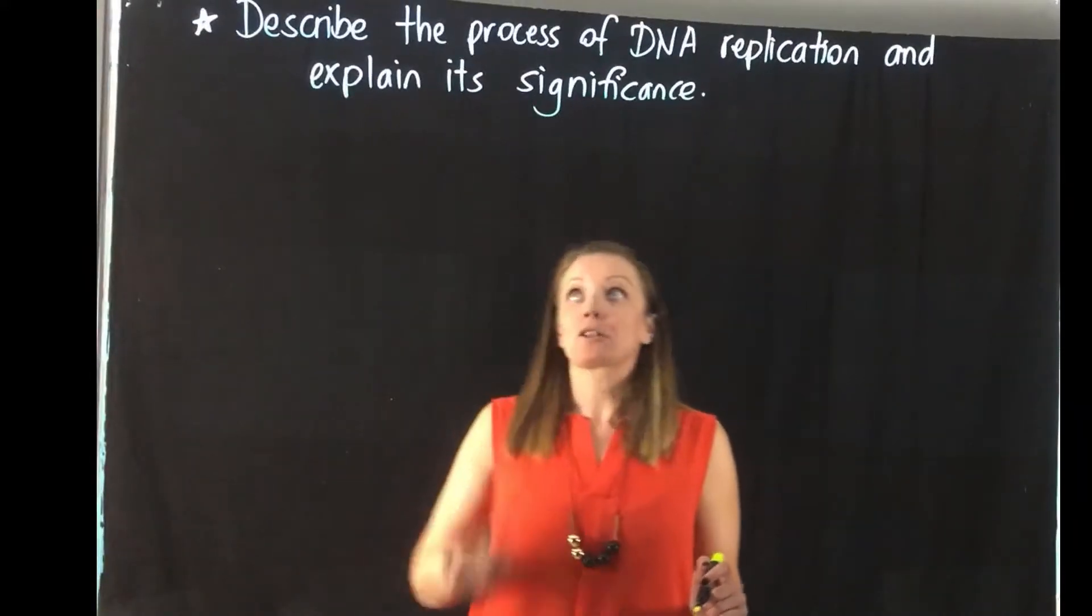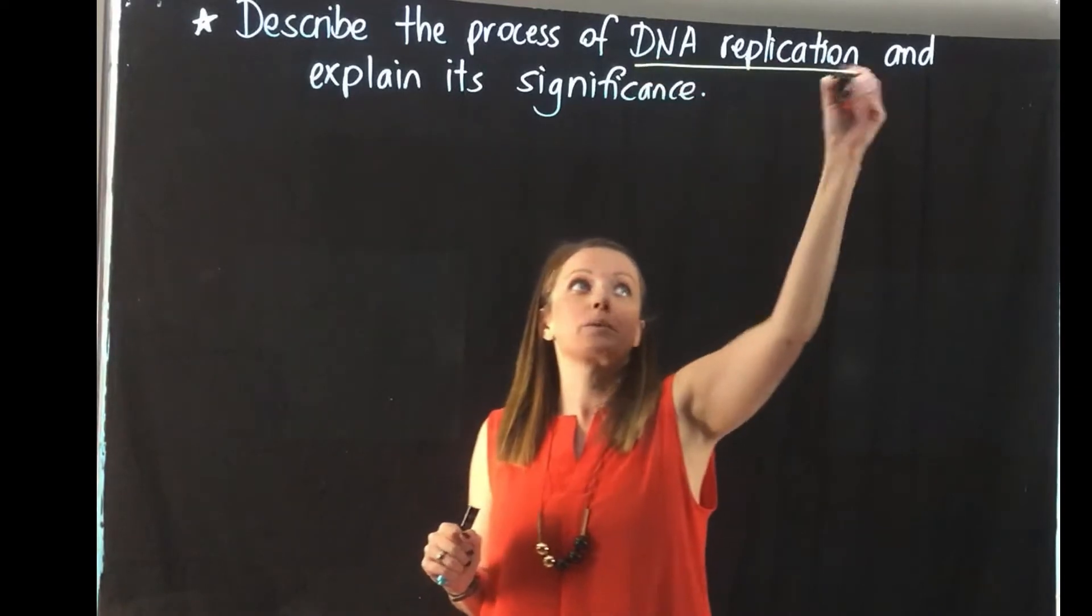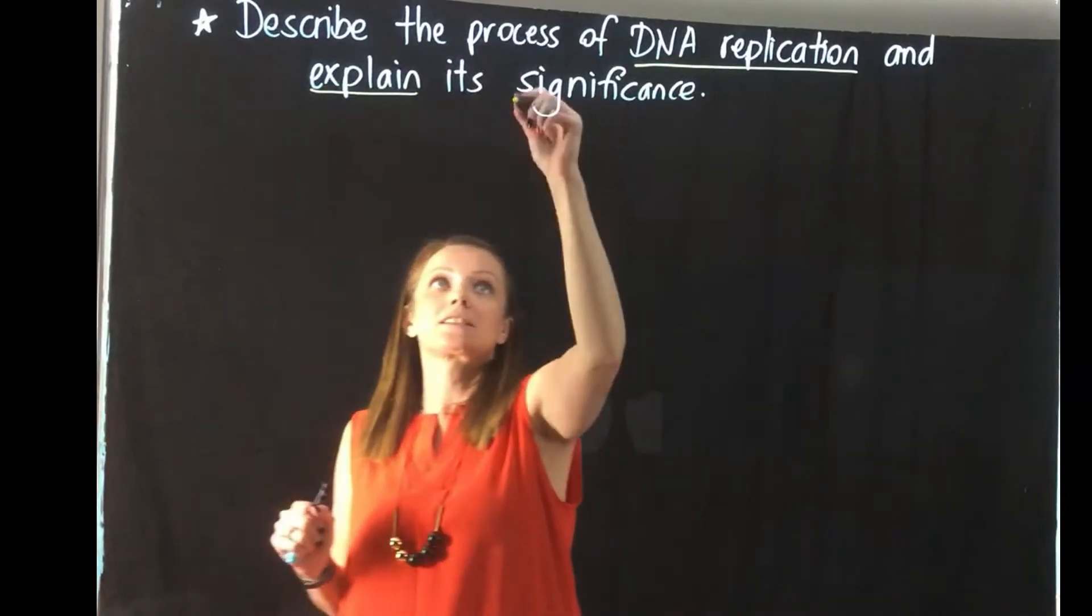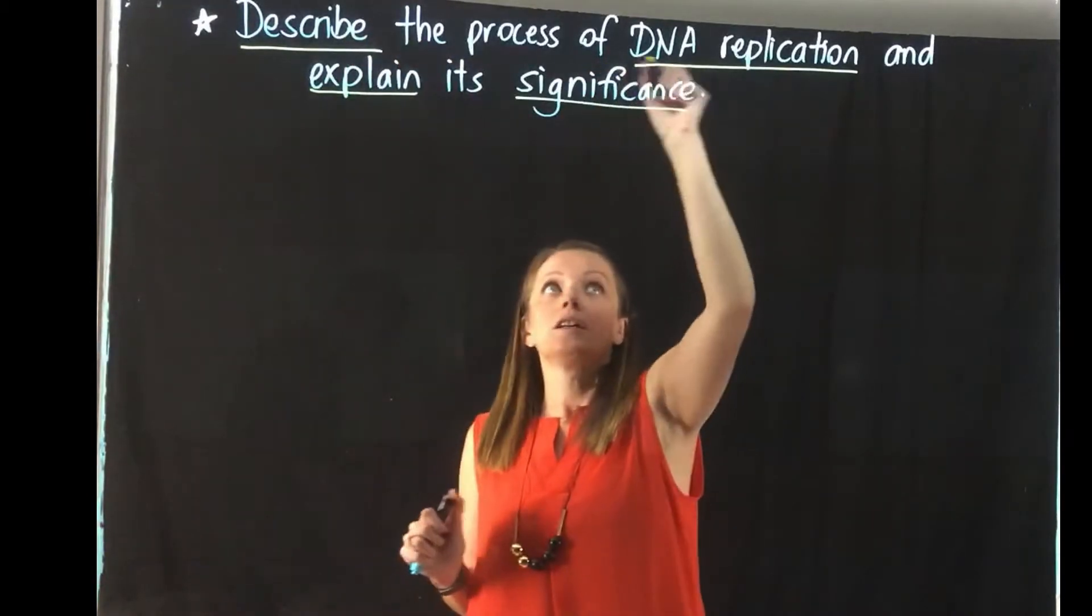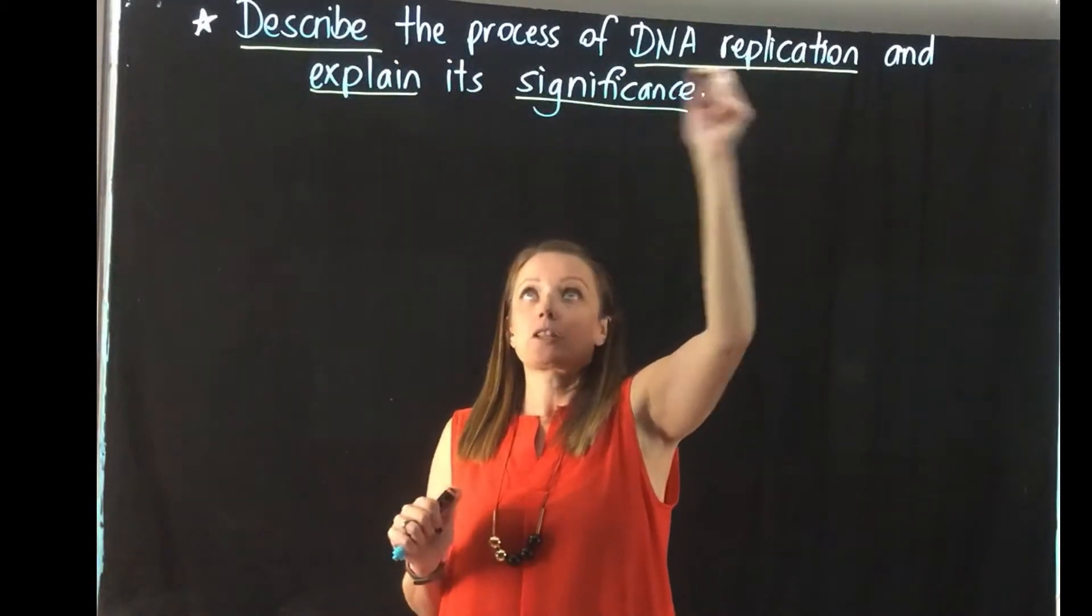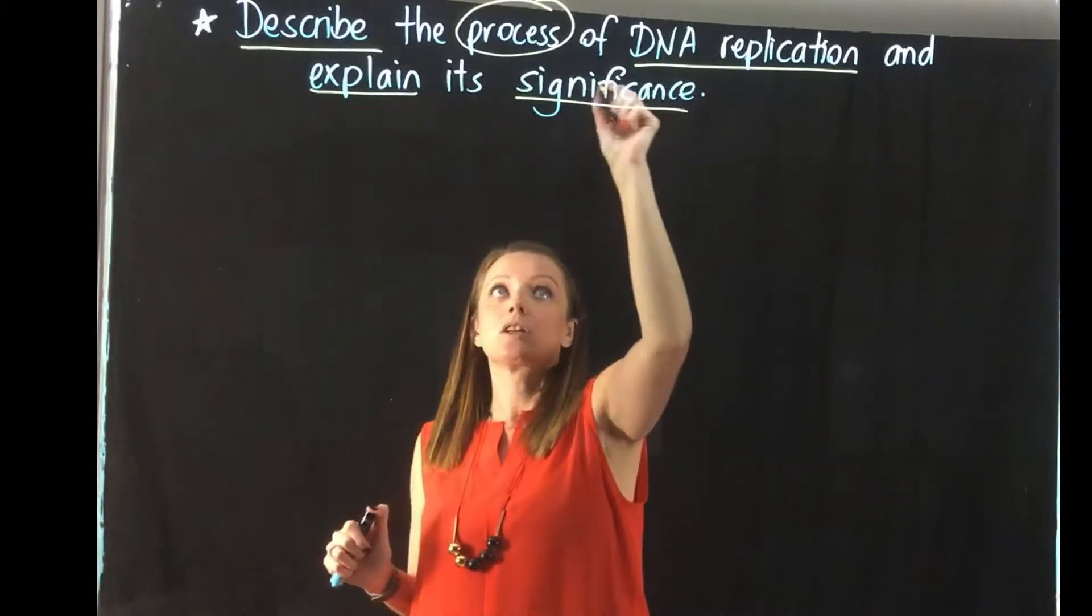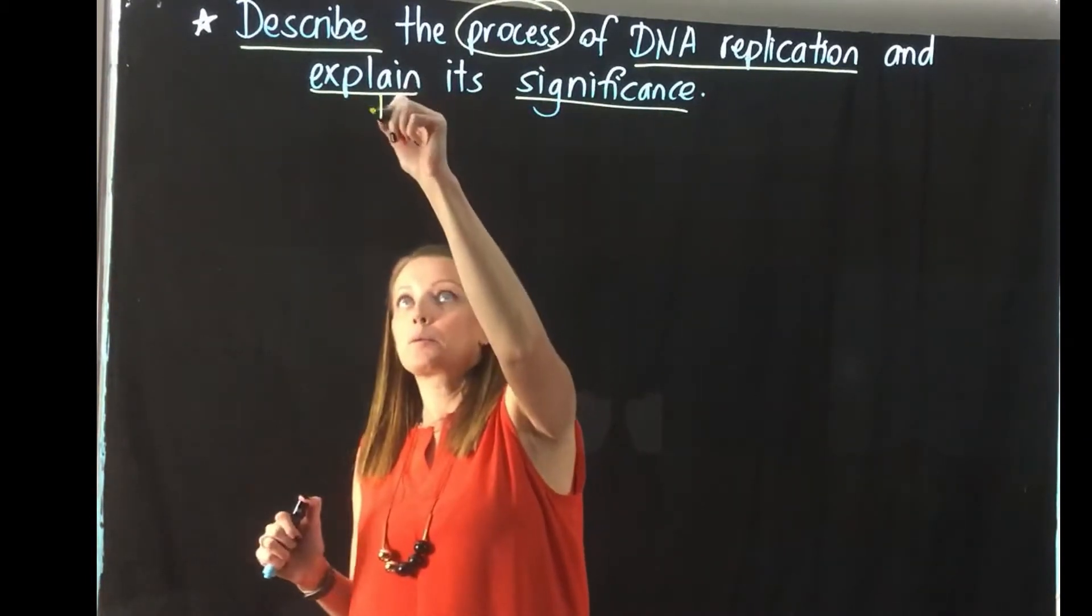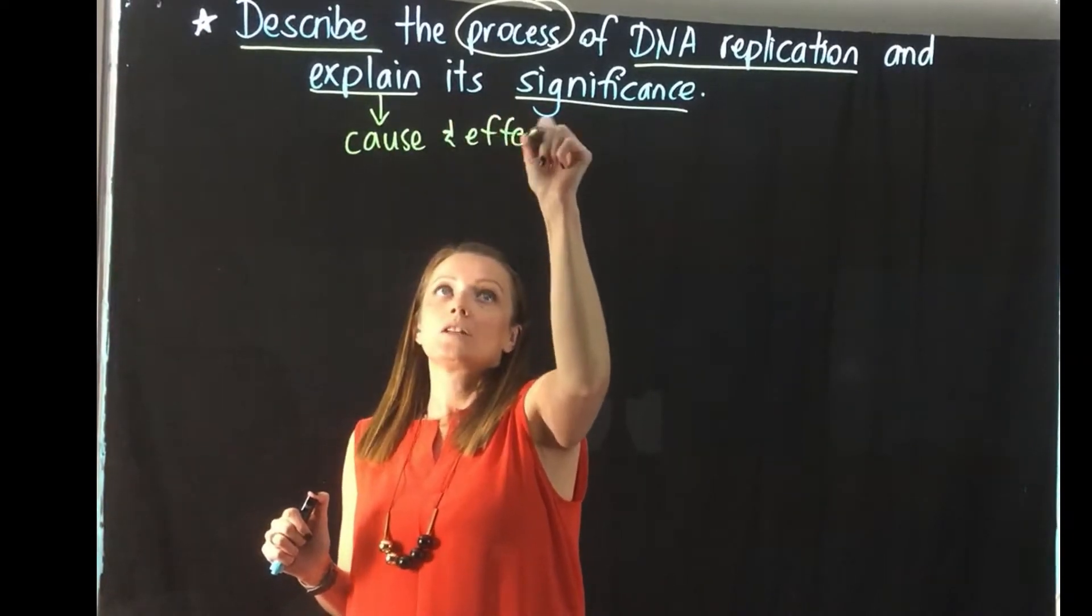Okay, so today we're going to look at this syllabus dot point: describe the process of DNA replication and explain its significance. We've got our two verbs - firstly describe the process of DNA replication, so what happens, and then explain its significance, so why is it important. Remember with the explain we need to link cause and effect.